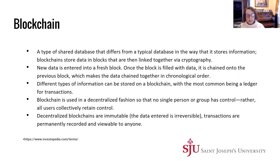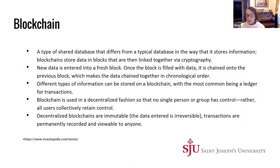Blockchain differs from typical databases because we use cryptography, which also helps maintain high levels of security. New data is entered into a fresh block; once it's filled, it's chained to the previous block, placing data in chronological order. The data is immutable — or non-fungible — it will be there forever, can never be edited or deleted. Think of it like an accounting ledger: it's a ledger for transactions.